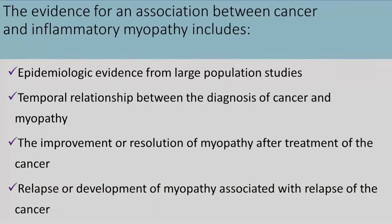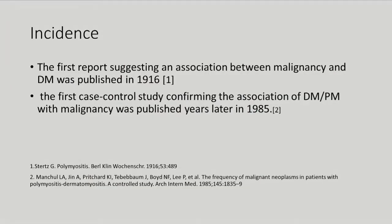This association is well known and has been extensively discussed in the literature. It is based on epidemiologic evidence from large populations and, more importantly, the presence of a temporal relationship between cancer and myositis, as well as the improvement of myositis after treatment of cancer and relapse of myositis after relapse of cancer. This relationship was first described in a case report in 1916 and confirmed through a case-control study in 1985, followed by many population-based cohort studies confirming the association and estimating the incidence of cancer-associated myositis.